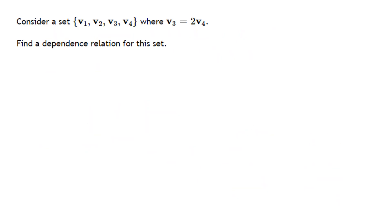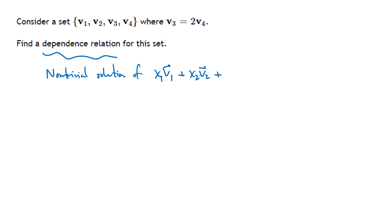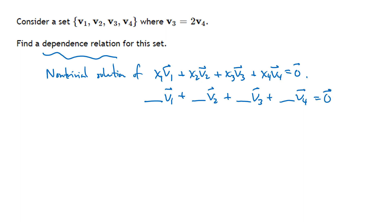One more question. Now we're not given actual vectors — just information about a set. We have a set {v1, v2, v3, v4} where v3 = 2·v4, and we want to find a dependence relation. A dependence relation is a non-trivial solution of x1·v1 + x2·v2 + x3·v3 + x4·v4 = 0 — numbers multiplying v1, v2, v3, v4 that sum to the zero vector, where not all those numbers are zero. We can't use all zeros — that's just the trivial solution.